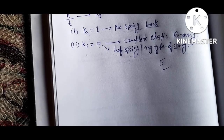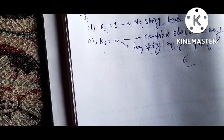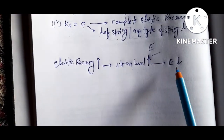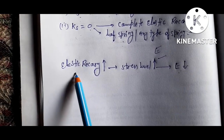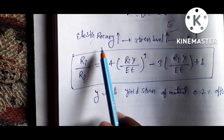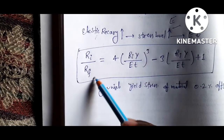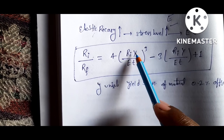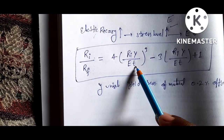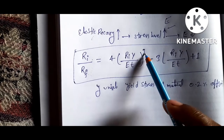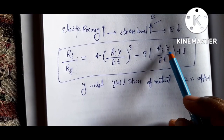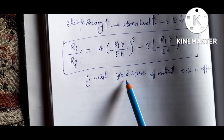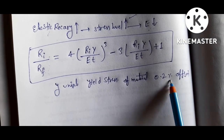From this basis, we calculate the formula. Elastic recovery increases if the stress level increases, or if the elastic modulus decreases. The formula is: RI/RF = 4(RI·Y / E·t)³ − 3(RI·Y / E·t) + 1, where Y equals the uniaxial yield stress of the material, and 0.2 percent offset is taken.